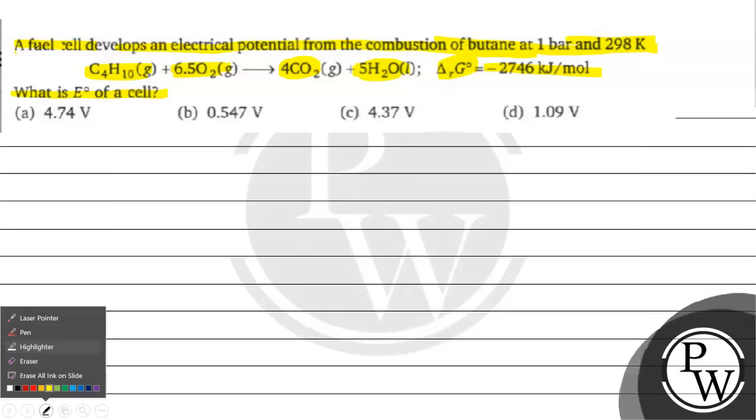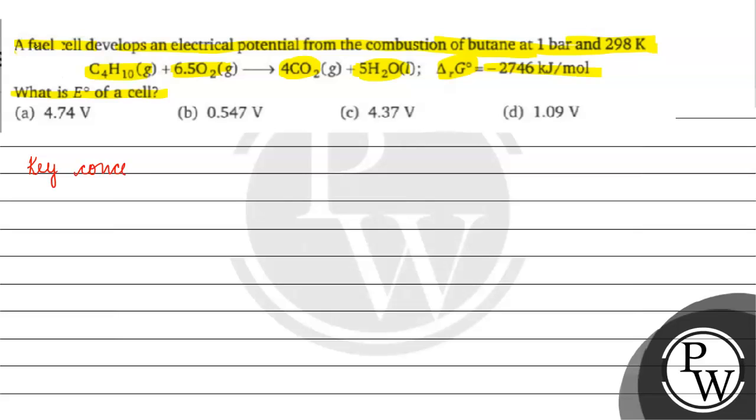The key concept for this question is delta G⁰ equals minus nFE⁰ cell. Delta G⁰ is the change in Gibbs free energy, n is the number of electrons involved, F is Faraday's constant which equals 96,500 coulombs per mole, and E⁰ is the standard electrode potential.